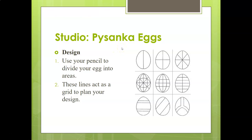For your design — and this works the same whether you're using a real egg, an optional egg, or paper — start by using your pencil to divide your egg into areas. These lines act as a grid to plan your design. You choose: a simple band going up and down, divided into four quarters, or more complex lines of patterns and curves — whichever one you want. Giving yourself a grid to work on is the first thing you do.